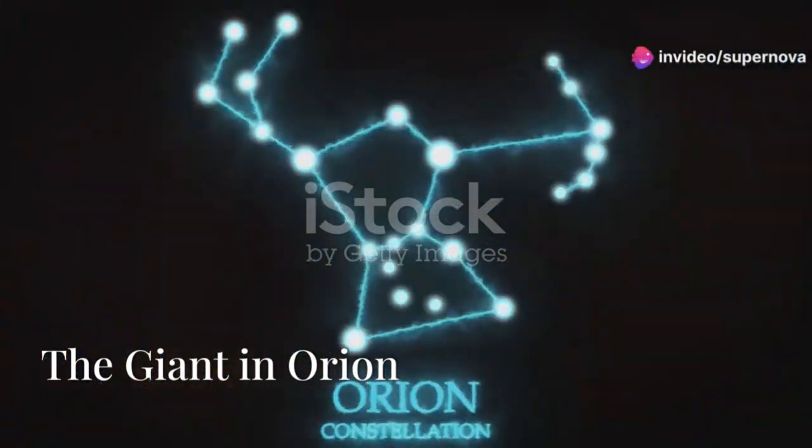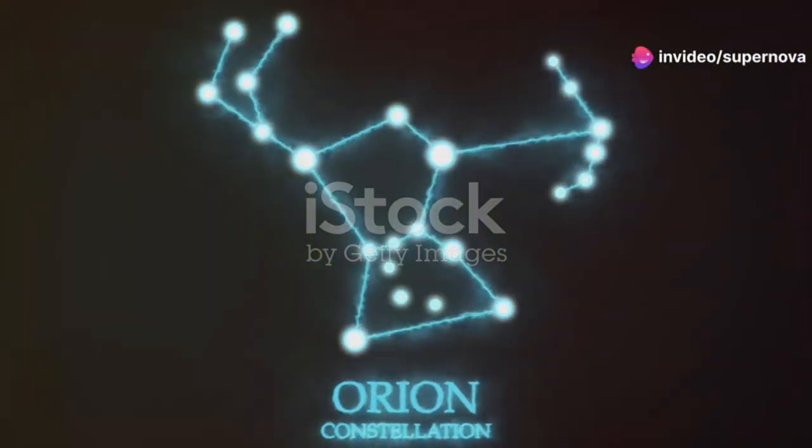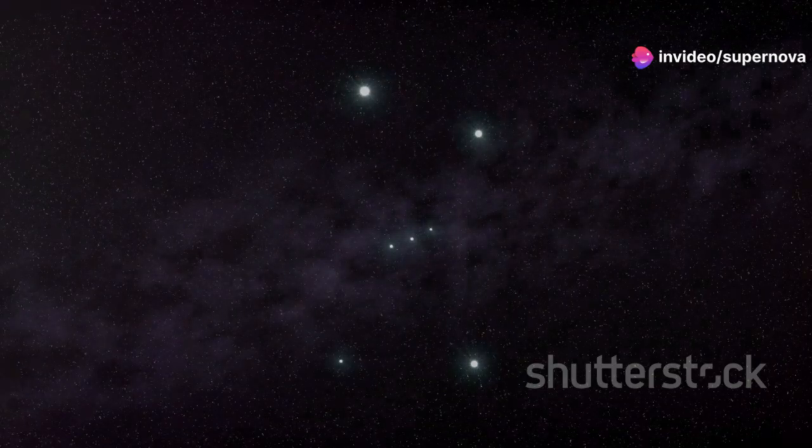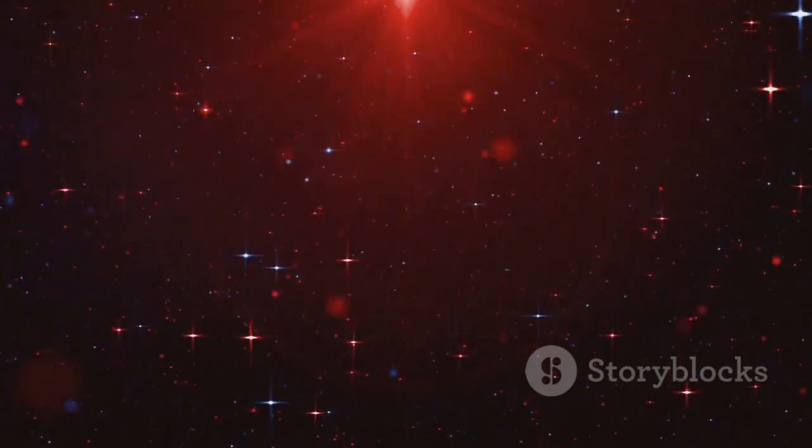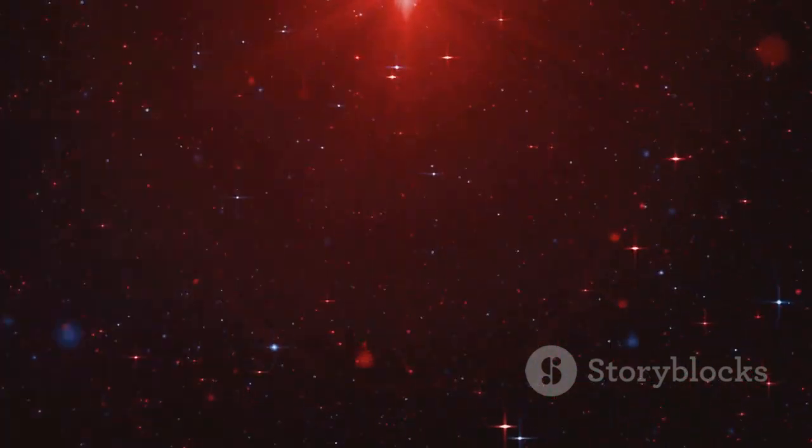Look up at the night sky and find the constellation Orion, the Hunter. It's easy to spot with its three-starred belt. On Orion's shoulder you'll see a bright reddish star. That's Betelgeuse, a star nearing the end of its life.